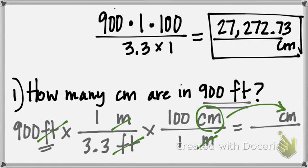And that seems like an awfully large number. But if you think about it, you have 900 feet, which is an awful long way, and you're trying to measure it out in little tiny centimeters, which is about that big. So would it take about 27,000 of them? I guess it would. The number is reasonable.